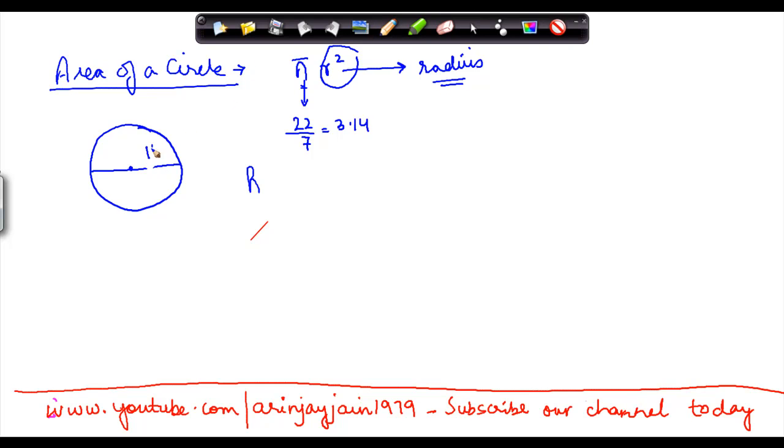So r is equal to 14 centimeters. Therefore, the area we know is 22 by 7 into r, which is 14 squared, or 22 by 7 into 14 squared.